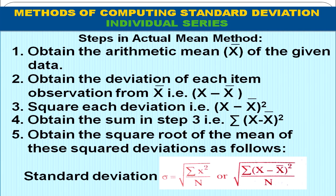Let us see the steps in the actual mean method. The very first step is to find out the mean value. The second step is to obtain the deviation of each item from the mean. The next step is to square the deviations, then sum them. Once we have identified this value, we apply the formula for standard deviation: σ = √(Σ(x − x̄)² / n). When we denote deviations from mean as small x, the formula becomes σ = √(Σx² / n).